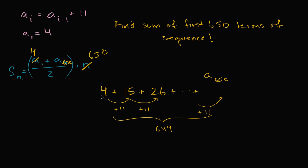Notice, to get to the first term, you added 11 one minus one times. You added 11 zero times. You started with the four, didn't add 11 at all. Then the second term, you add 11 once. Third term, you add 11 twice. Fourth term, you add 11 three times. 650th term, you add 11 649 times. And so if you add 11 649 times, what do you get? I'll get my calculator out for this.